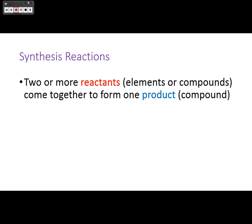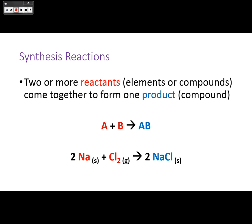Synthesis reactions have two or more reactants — elements or compounds — that come together to form one product, usually a compound: A + B → AB. For example, sodium plus chlorine makes sodium chloride, or iron plus oxygen makes iron(III) oxide. Two reactants, one product — that's how you identify a synthesis reaction.